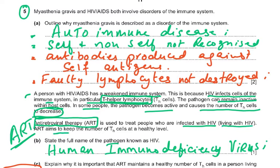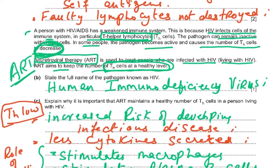ART aims to keep the number of helper T lymphocytes at a healthy level — we don't want them to decrease. We want them maintained at a healthy level because this will protect the patient and result in the immune response which is essential against pathogens. The full name of the pathogen HIV is human immunodeficiency virus, and you must spell it correctly.